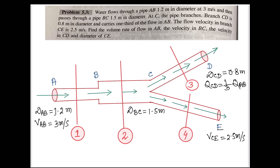Today I am going to solve one fluid mechanics problem based on the continuity equation. Water flows through pipe AB, 1.2 meter in diameter, at 3 meters per second, then passes through pipe BC, 1.5 meter in diameter. At C, the pipe branches: branch CD is 0.8 meter in diameter and carries one third of the flow in AB. The flow velocity in branch CE is 2.5 meters per second. Find the volume rate of flow in AB, the velocity in BC, the velocity in CD, and the diameter of CE.